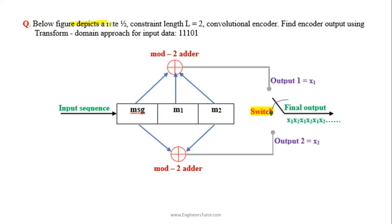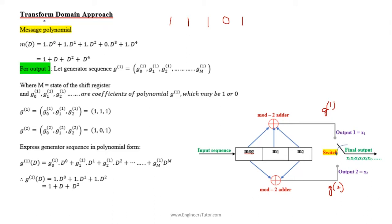The below figure depicts a rate 1/2, constraint length 2 convolutional encoder. Find the encoder output using the transform domain approach for the input data 11101. This is the given convolutional encoder, and the state of the encoder is represented by 2 bits m1 and m2, where msg holds the current message bit. We try to find the output of the encoder using the transform domain approach.